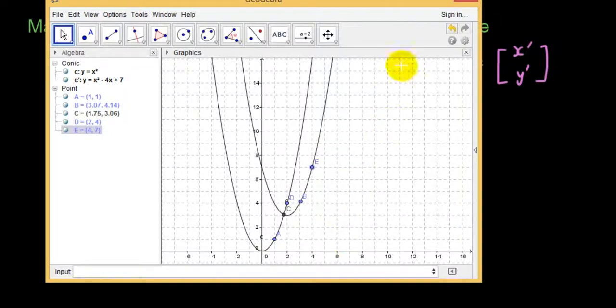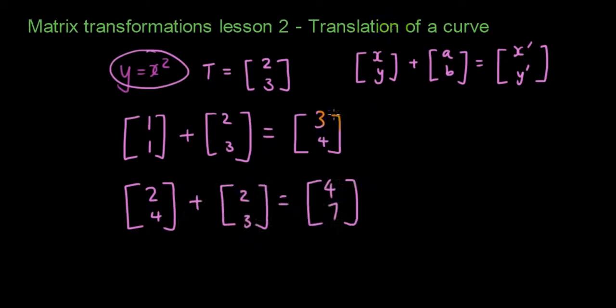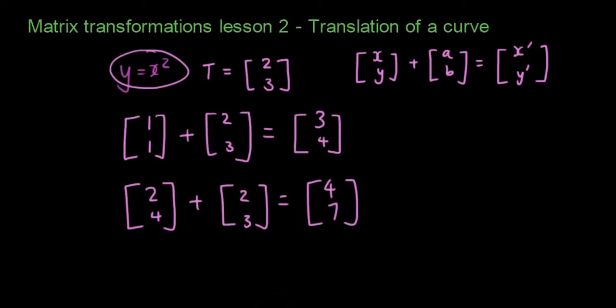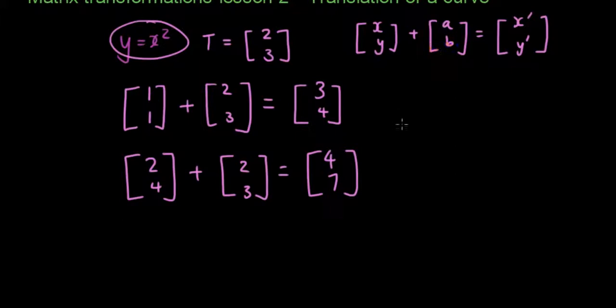But the problem is I want to know what the image curve's equation is, because I don't want to have to translate every single point in order to draw my new equation. Now you can see here, GeoGebra has done the equation for us, but we need to know how it got that equation. So what do you do? Well, let's use our general formula.